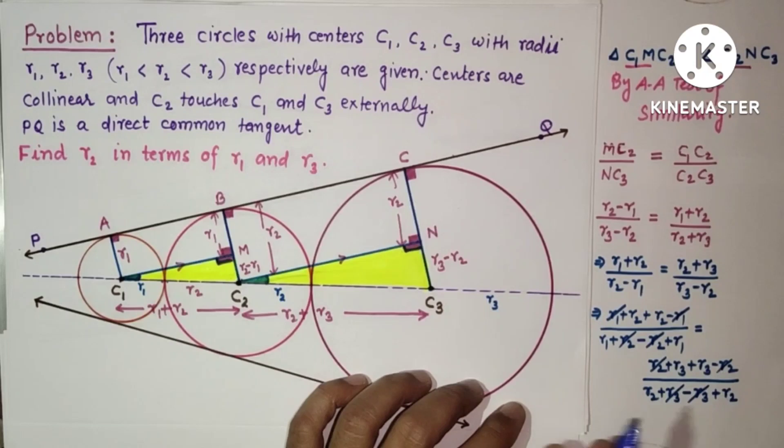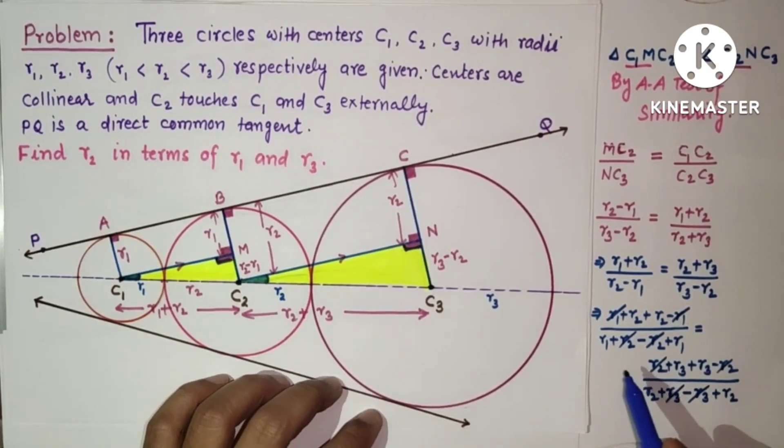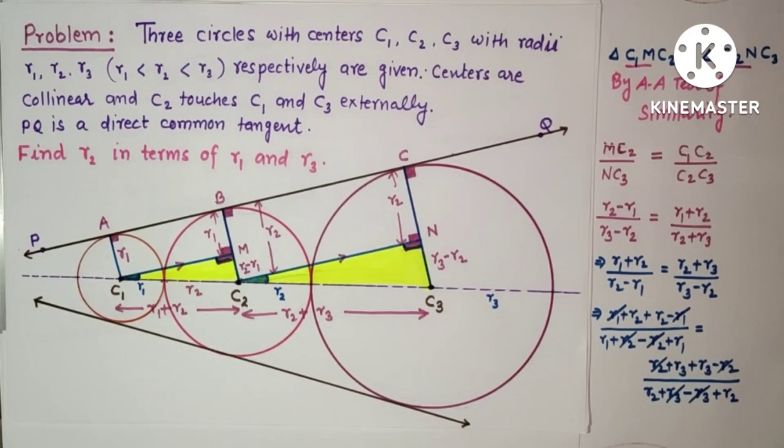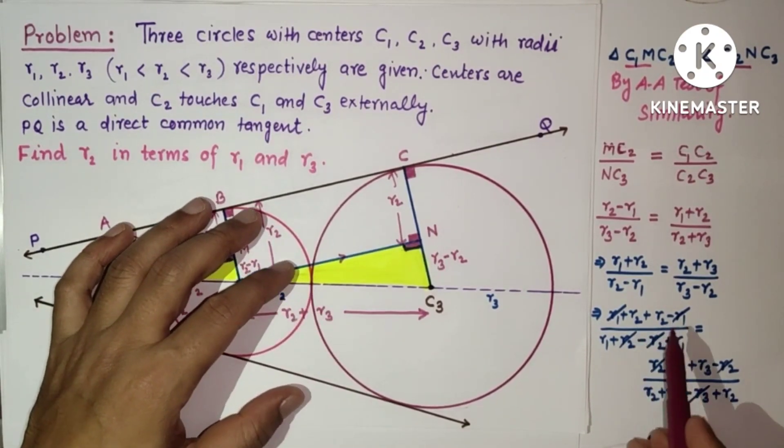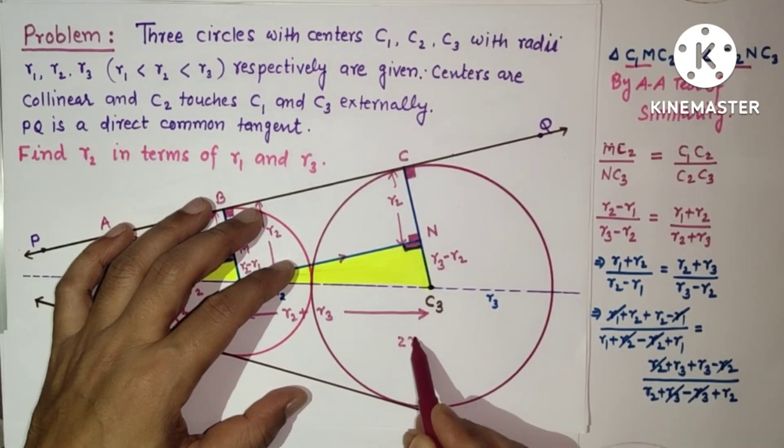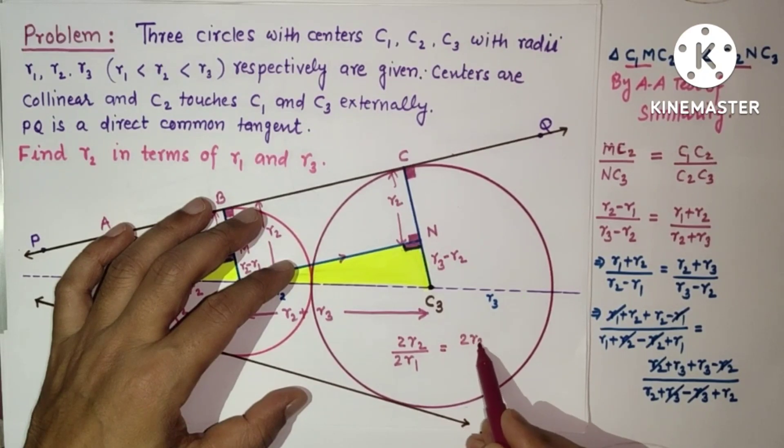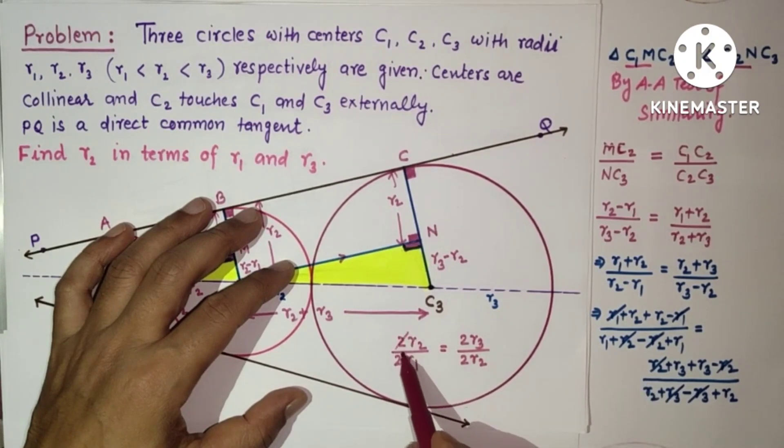So we got from this R2 plus R2, which is 2R2, over R1 plus R1, which is 2R1, equals R3 plus R3, which is 2R3, over R2 plus R2, which is 2R2. So 2 and 2 will get cancelled.